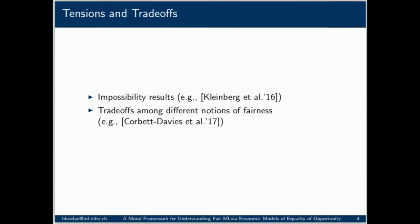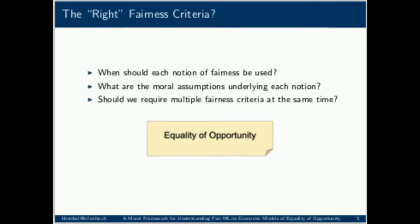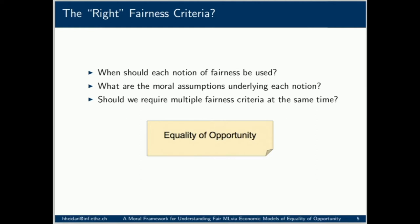Instead of requiring multiple fairness criteria to partially hold at the same time, we focus on selecting the right notion of fairness given the societal context in which the model is to be deployed. To put it differently, we address the normative question of when should we use each notion of fairness. We do this by mapping the recently proposed notions of algorithmic fairness to economic models of equality of opportunity.